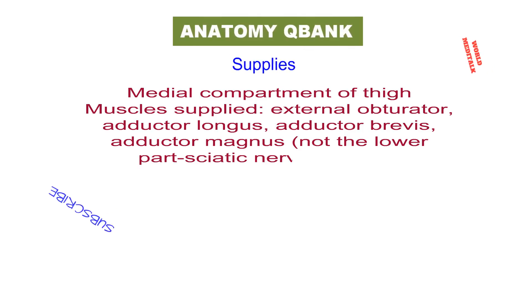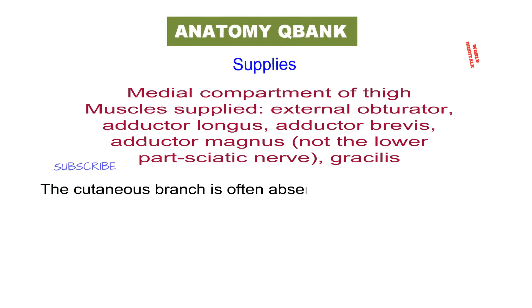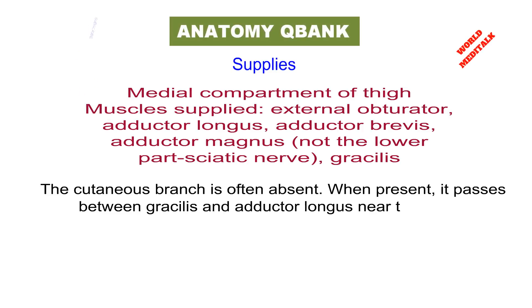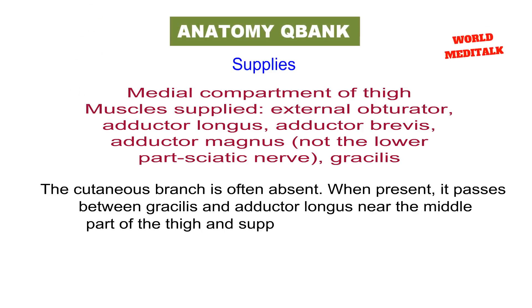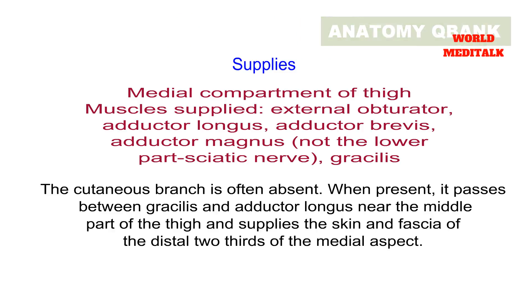The cutaneous branch is often absent. When present, it passes between gracilis and adductor longus near the middle part of the thigh and supplies the skin and fascia of the distal two-thirds of the medial aspect.